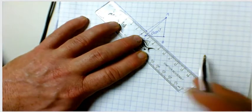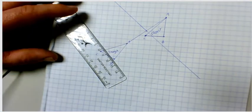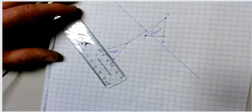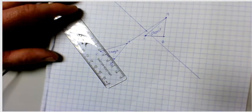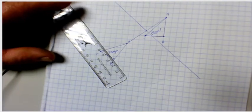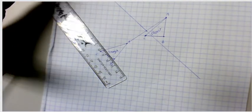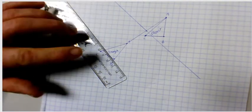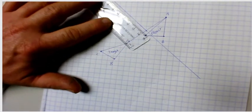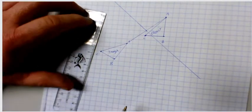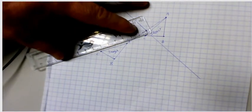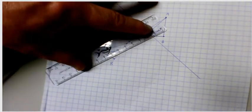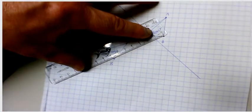Normally in an exam I would say always use a set of compasses. The only reason I'm showing the ruler method is in case you're at home and don't have compasses — it is a way you can still do it with just a ruler.